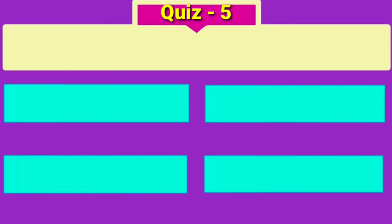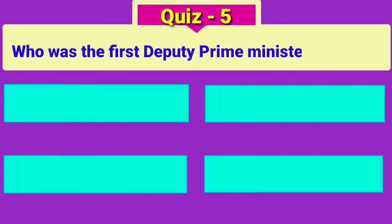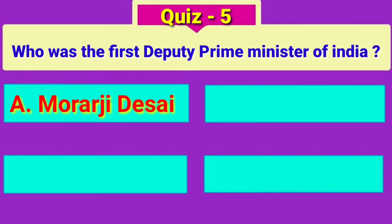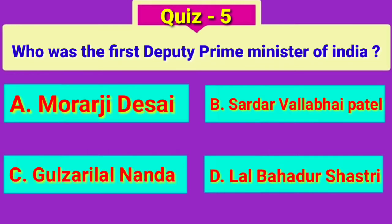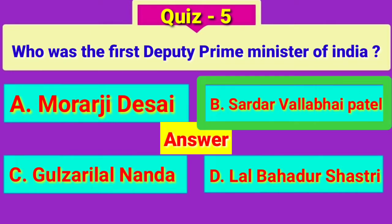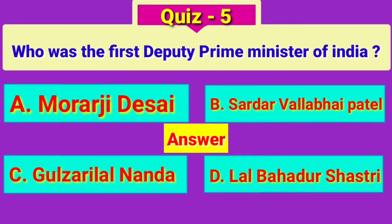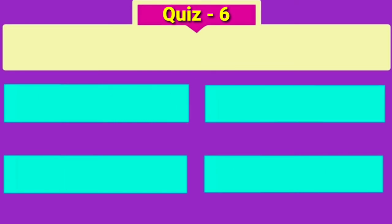Question number 5. Who was the first deputy prime minister of India? Answer: Sardar Vallabhai Patel.